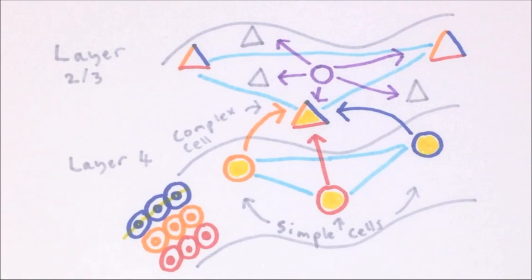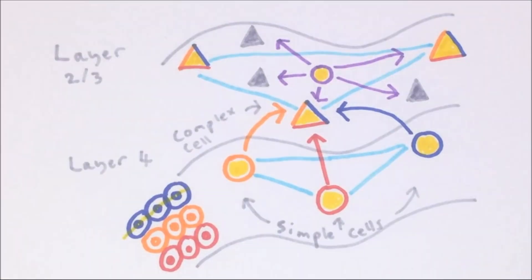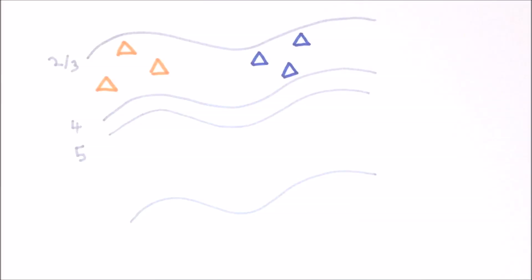Inhibitory interneurons innervate surrounding neurons regardless of orientation tuning, and receive input regardless of orientation tuning. This results in a dense blanket of inhibition, meaning that when a line is presented, a sparse sub-network of complex cells tuned to that orientation will recurrently excite each other, whilst neurons tuned to different orientations will not be able to overcome this inhibition.